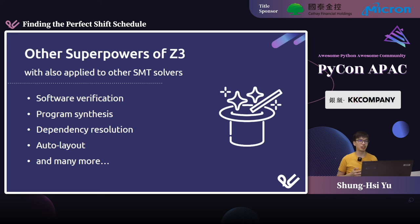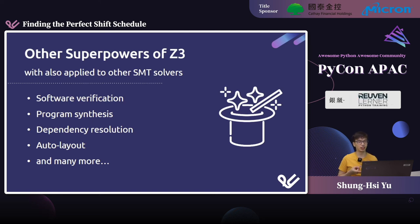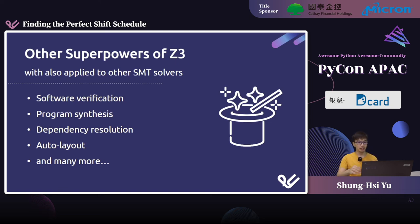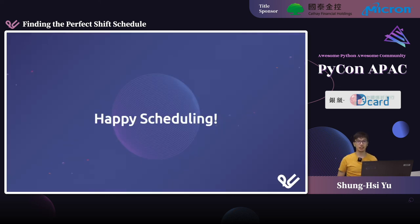Before closing, there's something I must say — not really related to scheduling specifically, but about Z3 and SMT solvers in general. They are a quite magical tool. Besides scheduling, they can solve vehicle routing, bin packing, or the traveling salesman problem. They can also do software verification — forming mathematical proofs that your program works correctly under certain conditions — as well as program synthesis and dependency resolution, and many more. That's the end of my talk. Happy scheduling. Thank you.